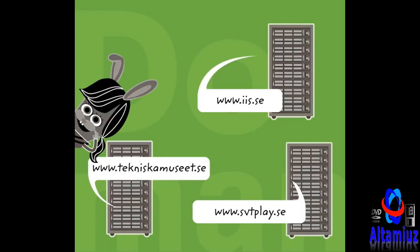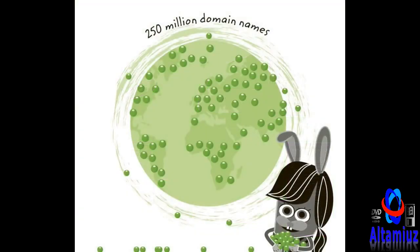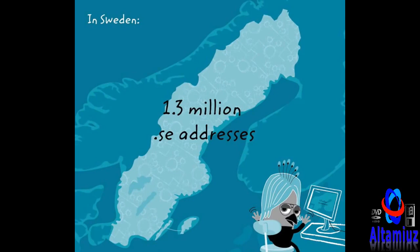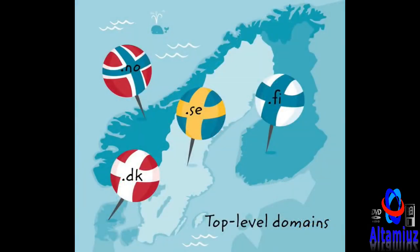It is the servers that have domain names, not the computer, mobile, or tablet. There are around 250 million domain names in the world — in other words, there is unbelievably much to discover on the internet. Addresses that end in .se have a connection to Sweden, and there are around 1.3 million .se addresses. There are also other addresses that end with two letters that show which country a site has as its home.